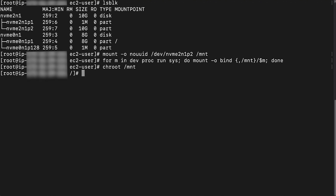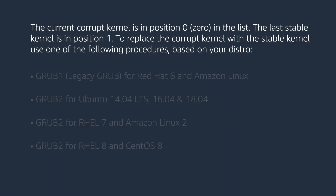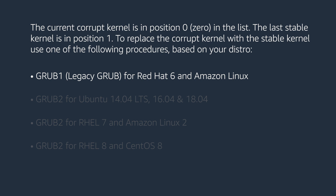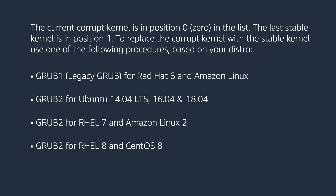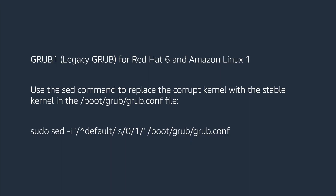Call the chroot function to change into the mount directory. Please note: for a separate boot partition, please mount to /mnt/boot before doing chroot. Update the default kernel in the GRUB bootloader. The current corrupt kernel is in position 0 in the list; the last stable kernel is in position 1. To replace the corrupt kernel with the stable kernel, use one of the following procedures based on your distro. GRUB 1 for Red Hat 6 and Amazon Linux 1: use the set command to replace the corrupt kernel with the stable kernel in the /boot/grub/grub.conf file.